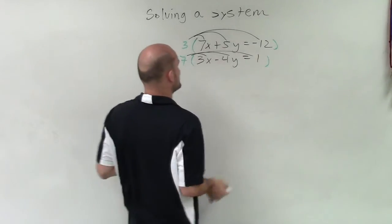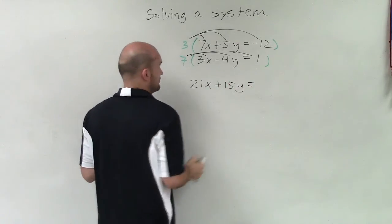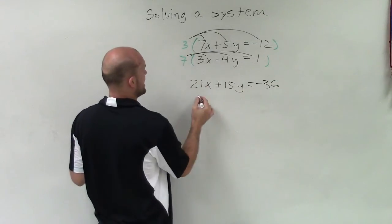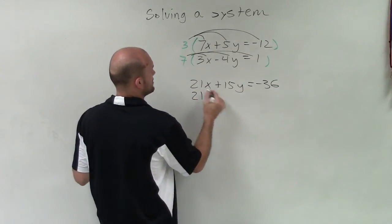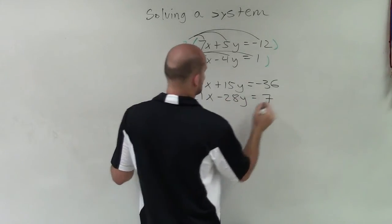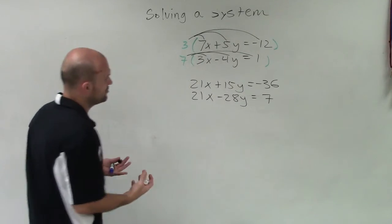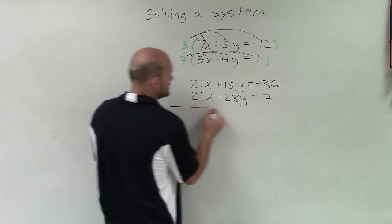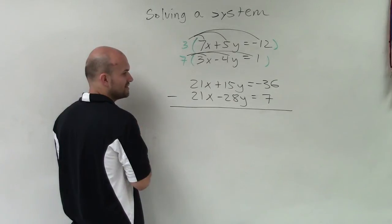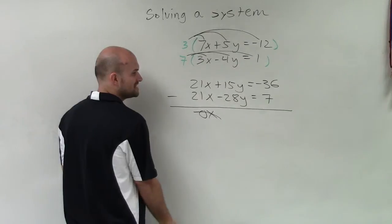The equivalent equations are going to be 21x plus 15y equals negative 36, and then 21x minus 28y equals positive 7. Those are equivalent equations, just multiplied by a multiplier. What's so important is now we have two coefficients that are exactly the same, and since they're both the same sign, I'm going to subtract the two equations. So 21x minus 21x is going to be 0x, which eliminates the variable x.